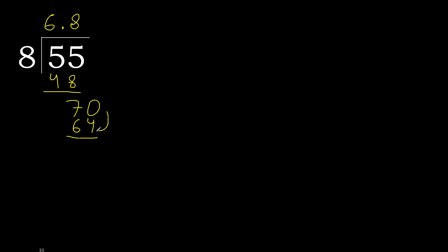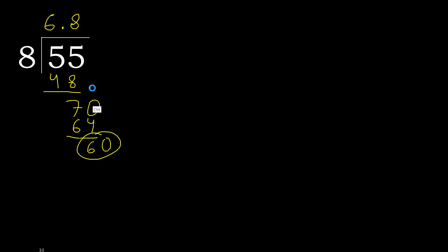Subtract 6. That is no number, therefore complete — always complete with 0. Complete point. Ok, 60.